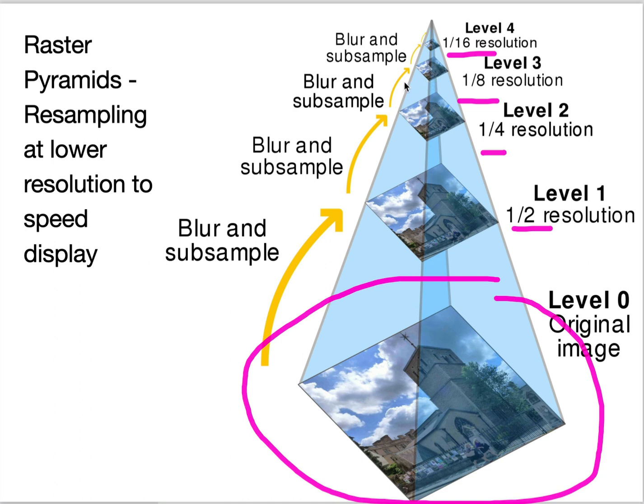So this makes the raster image itself, or the vector, I'm sorry, the raster spatial data larger because I'm saving each of these levels.